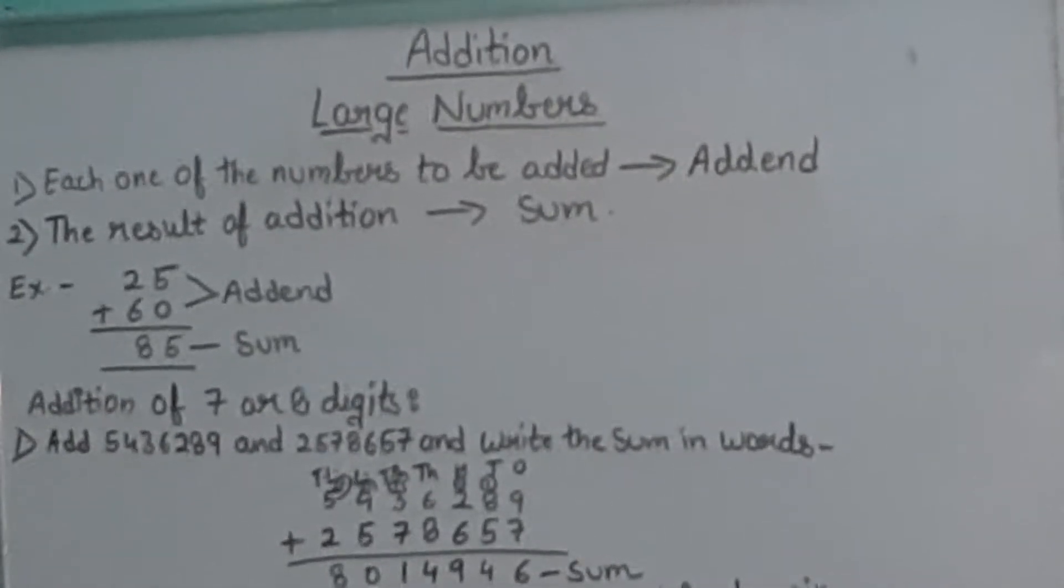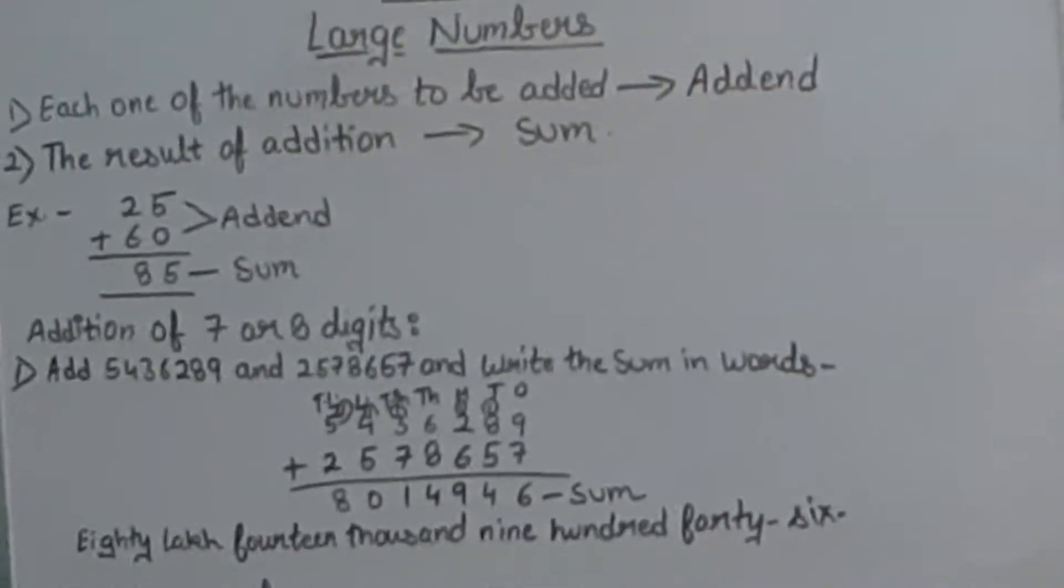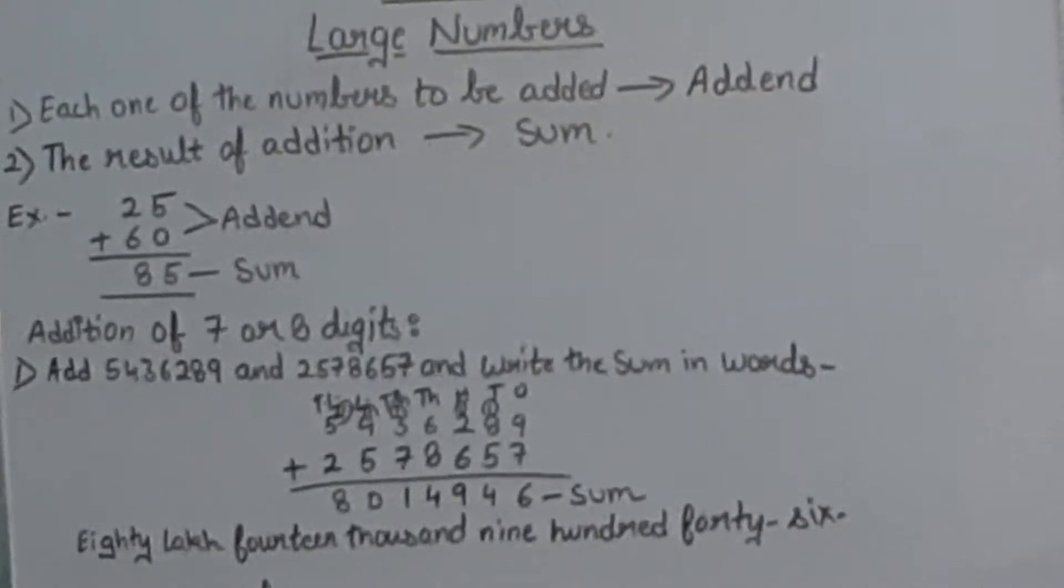In addition, there are two terms. First is addend - each one of the numbers to be added is called the addend. And sum is the result of addition, meaning whatever result we get after adding the numbers, that result is called the sum.